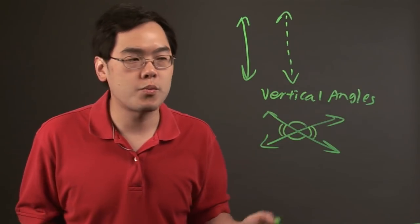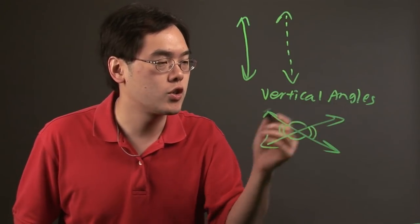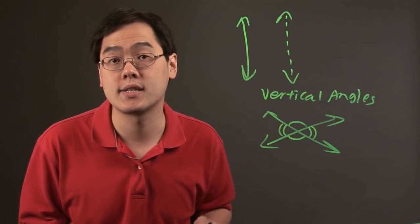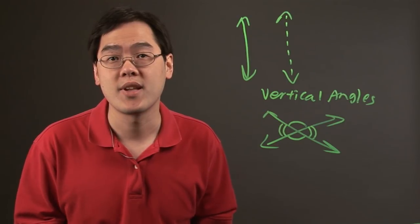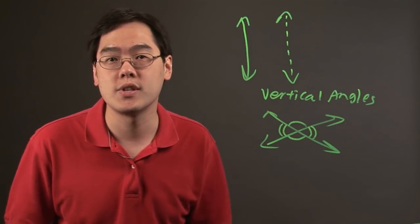So verticals are probably more well known as vertical angles, but it could mean, depending on the context, vertical lines and vertical asymptotes. So I'm Jimmy Chang and that's what are verticals in math.